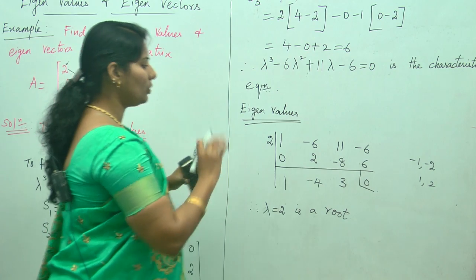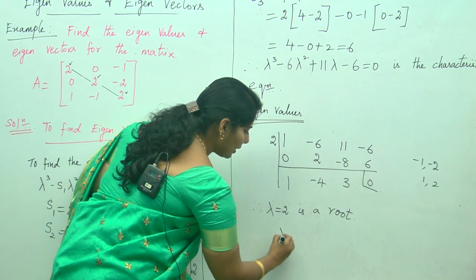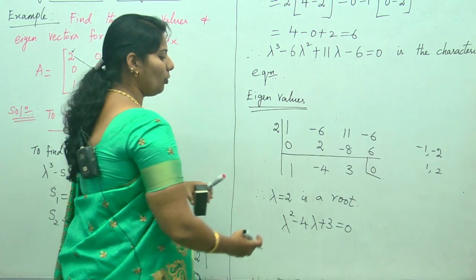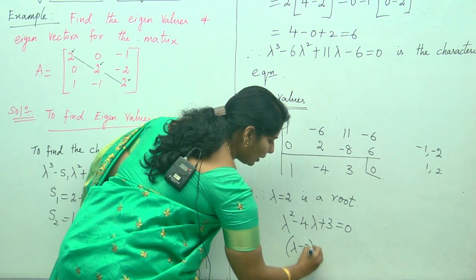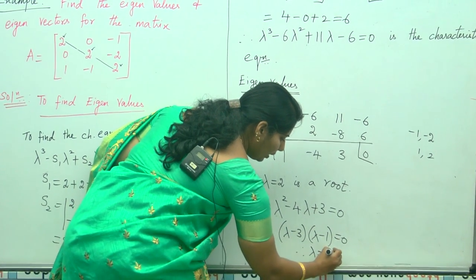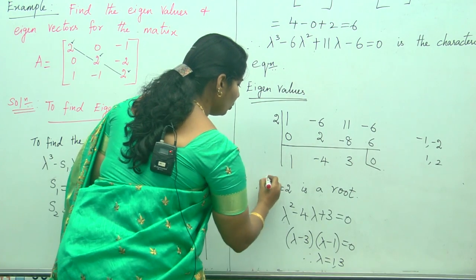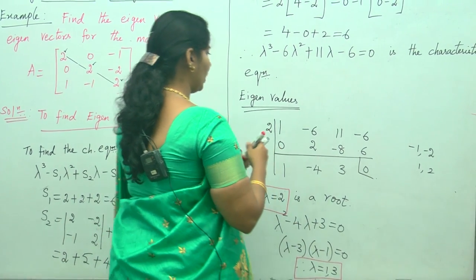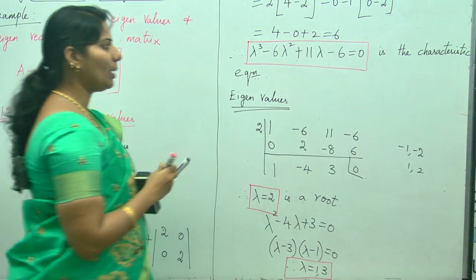We need 3 roots and have found 1 so far. The reduced equation from synthetic division is lambda squared minus 4 lambda plus 3 equals 0. No need for synthetic division now — factorize directly: (lambda minus 3)(lambda minus 1) equals 0, giving lambda equals 1 and lambda equals 3. So the three eigenvalues are lambda equals 1, 2, 3. The characteristic equation is lambda cubed minus 6 lambda squared plus 11 lambda minus 6 equals 0.